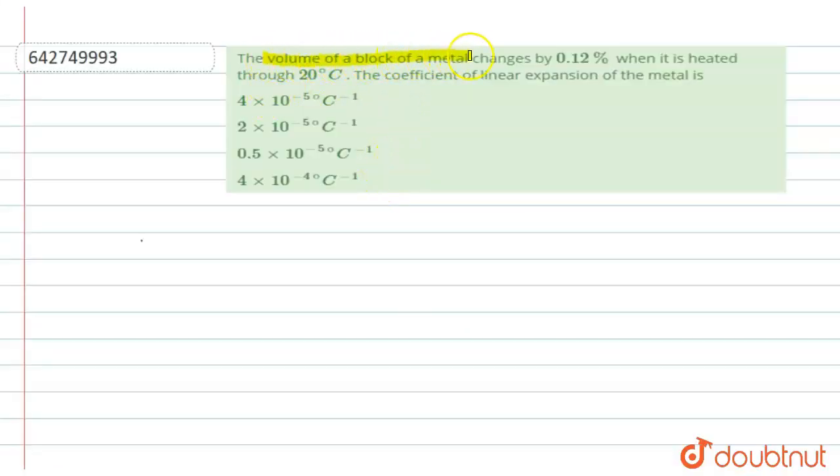The volume of a block of a metal changes by 0.12 percent when it is heated through 20 degrees Celsius. So in this question we will calculate the coefficient of linear expansion of the metal.